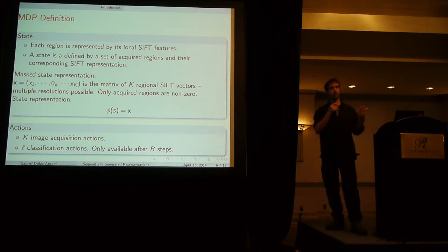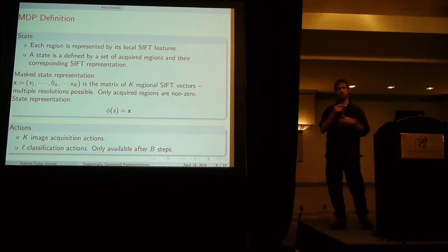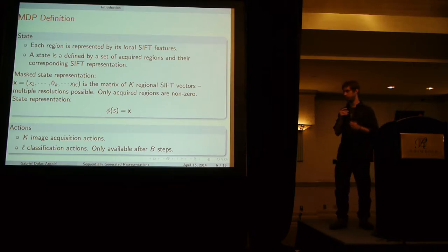As the process advances in the acquisition task, these rows are going to one by one get filled out by the regions acquired. But at first the matrix is going to be empty. So our state representation is just this matrix sliced down into a vector.